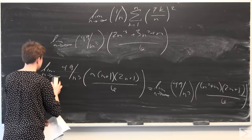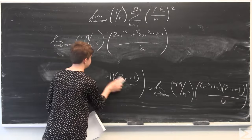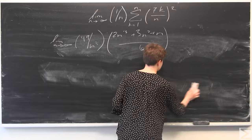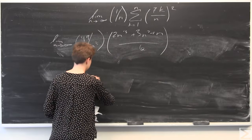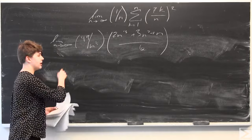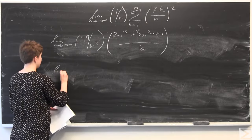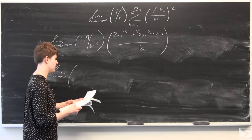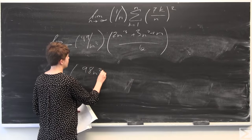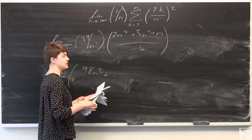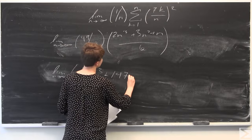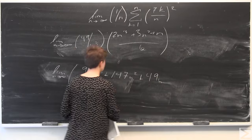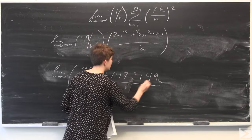So finally, what I'm going to do is multiply that larger fraction by 49 over n cubed. So we get the limit as n goes to infinity. So 2 times 49 gives us 98n cubed, plus 3 times 49 which is 147n squared, plus 49 times 1 which is just 49n, all over 6n cubed.